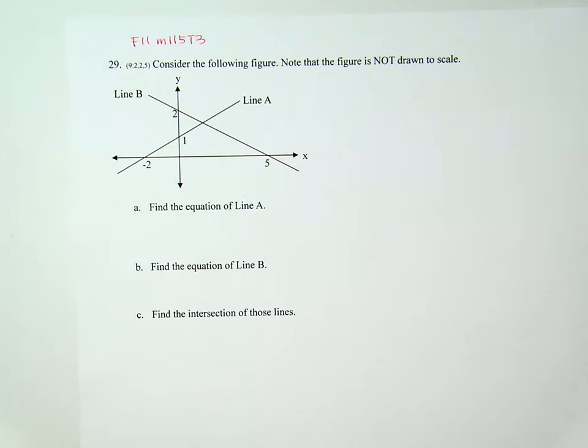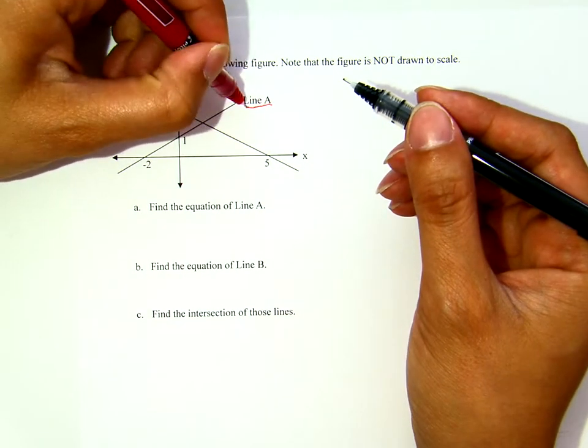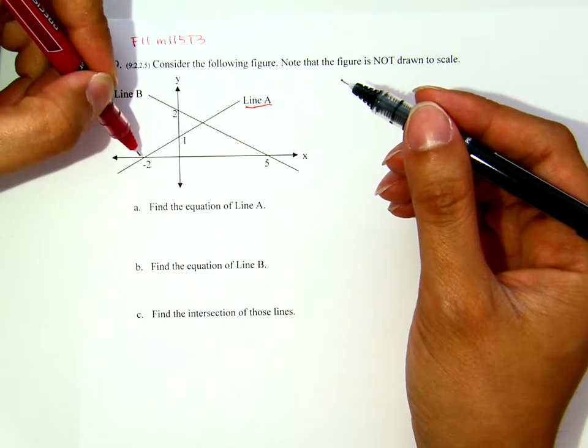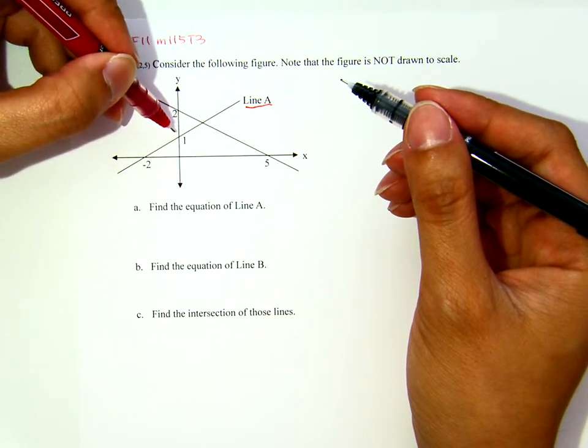Part A, find the equation of line A. This is line A. You have the x-intercept is negative 2, 0 and the y-intercept is 0, 1.